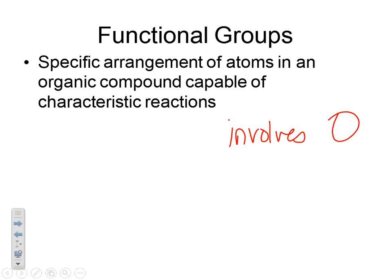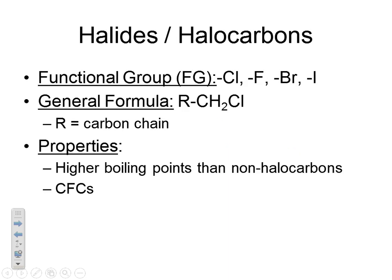Table R on your reference table is a really big table and gives you a lot of information about these functional groups. In these videos I'm going to go through these functional groups and talk about how they're named. I will be abbreviating functional group as FG. The first functional group we've actually already seen: it's a halide or a halocarbon.